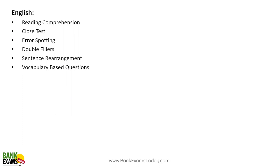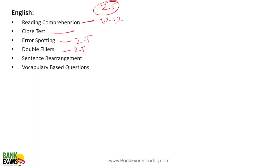In English language, topics include reading comprehension, cloze test, error spotting, double fillers, sentence rearrangement, and vocabulary-based questions. Out of 25 questions, reading comprehension will account for 10-12 marks. There may be a cloze test within or alongside the RC. Error spotting gives 2-5 marks, double fillers 2-5. Para jumbles or sentence rearrangement will definitely appear — 0 to 5 questions. Vocabulary-based questions like synonyms and antonyms are often asked within the RC itself. Two RCs are very common.